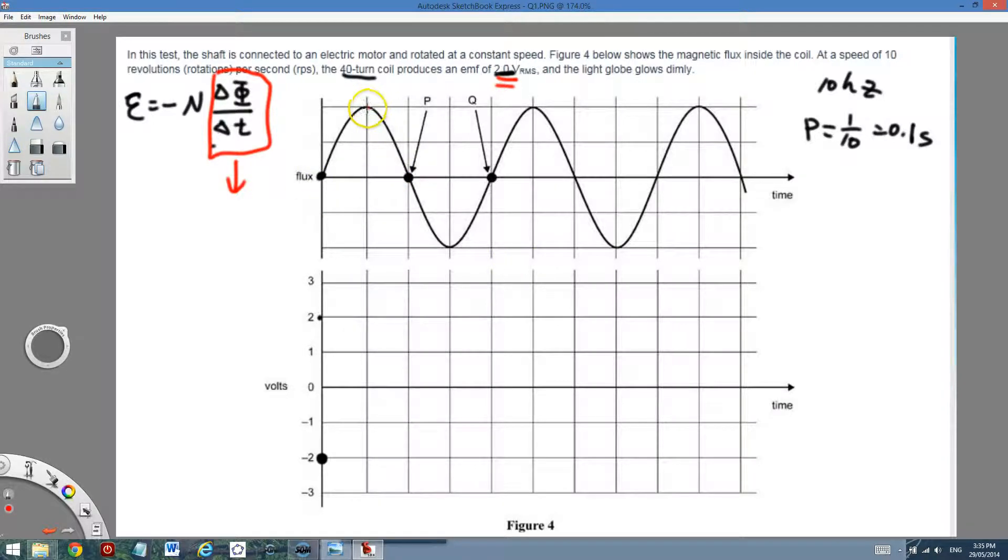Then look at this part. It's a turning point. At the turning point, the gradient is 0. So the rate of change of magnetic flux over time will be 0. Thus, induced EMF is going to be 0.